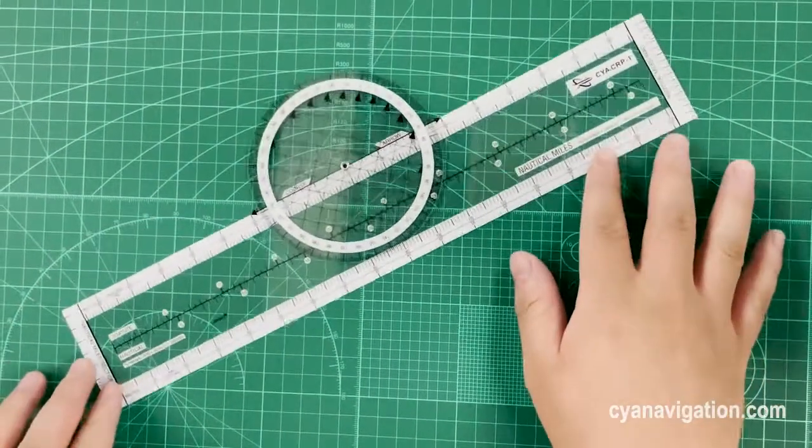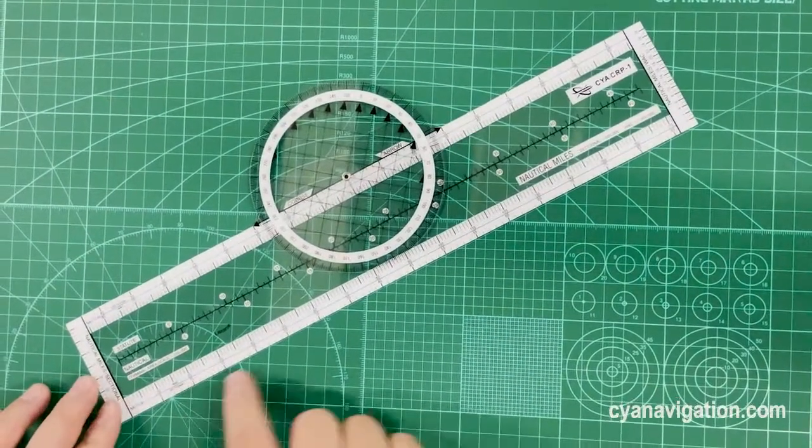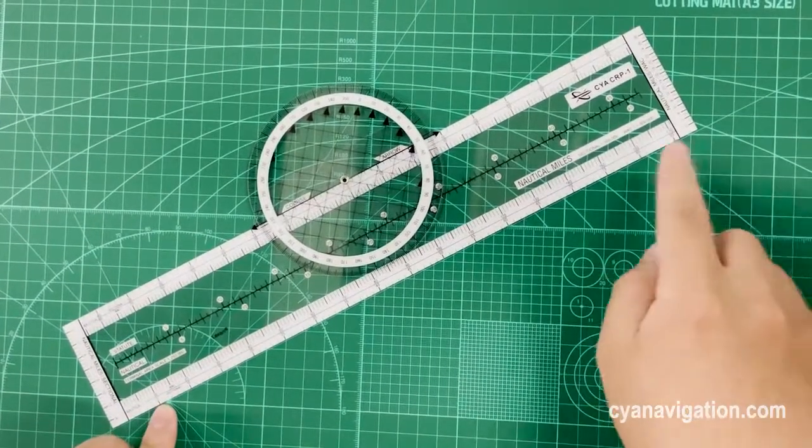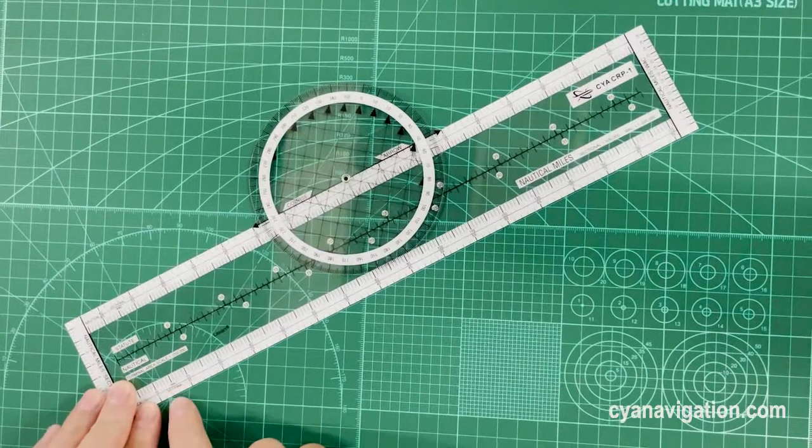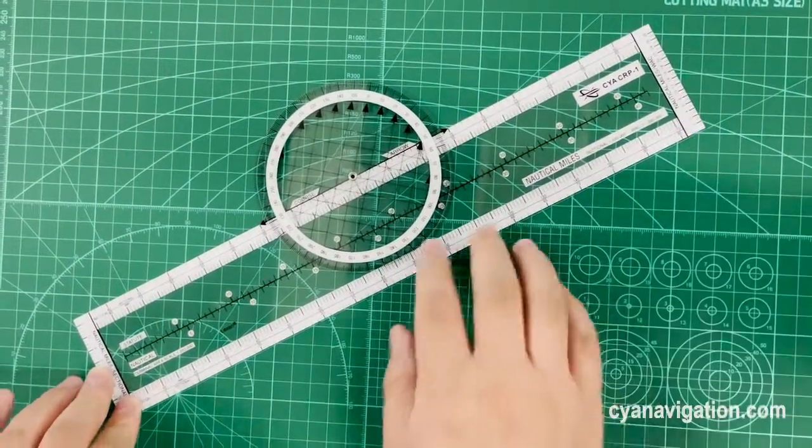Here we just assume this green map as a navigation map. If we need to measure the distance between departure point to our destination airport, just put the plotter here and use this side to draw a straight line.